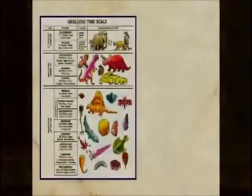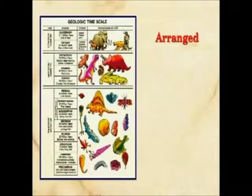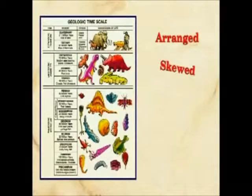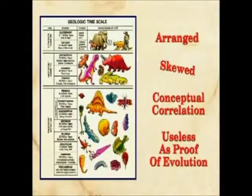You don't have this kind of ordered sequence. This is an arranged, skewed misrepresentation of what's actually there. It's a conceptual correlation that is useless as proof of evolution because it's based on circular logic.